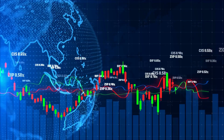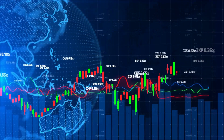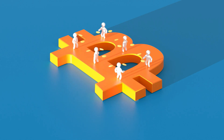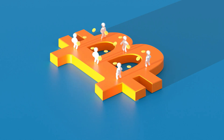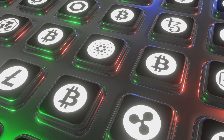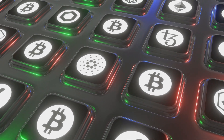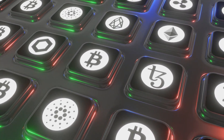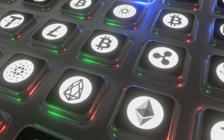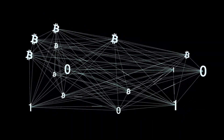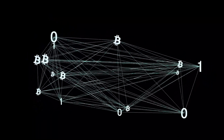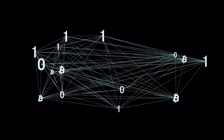The year 2009 saw the introduction of Bitcoin, which marked the first cryptocurrency. Cryptocurrencies are digital assets that utilize cryptography to safeguard transactions and regulate the production of new units. Cryptocurrencies are decentralized and function autonomously from central banks, and they are gaining momentum as a payment and investment option.